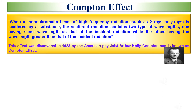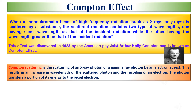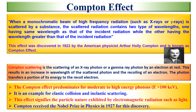When a monochromatic beam of high-frequency radiation, such as X-rays or gamma rays, is scattered by a substance, the scattered radiation contains two types of wavelengths: one having the same wavelength as that of the incident radiation, and the other having a wavelength greater than that of the incident radiation. This effect was discovered in 1923 by American physicist Arthur Holly Compton and is known as the Compton effect. Compton scattering is the scattering of an X-ray or gamma ray photon by an electron at rest, resulting in an increase in wavelength of the scattered photon and the recoiling of an electron. The photon transfers a portion of its energy to the recoil electron. The Compton effect predominates for moderate to high energy photons, and is an example of elastic collision and inelastic scattering. This effect signifies the particle nature exhibited by electromagnetic radiation such as light.